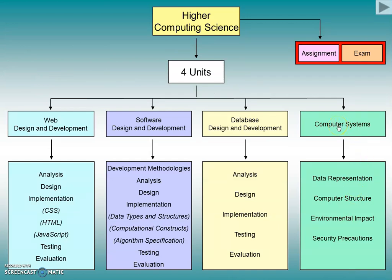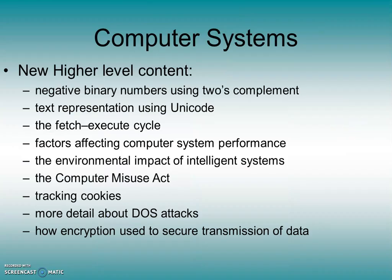For computer systems — which is where we're going to begin — we're going to look at negative binary numbers using a technique called two's complement, text representation using Unicode as opposed to ASCII, the fetch-execute cycle, and factors that affect computer system performance like cache or the data bus width. We're going to look at the environmental impact of intelligent systems, the Computer Misuse Act, tracking cookies, DOS attacks in more detail including the symptoms of an attack, reasons why people might carry out an attack, and also how encryption can be used to secure the transmission of data.